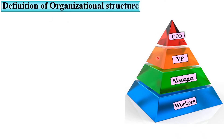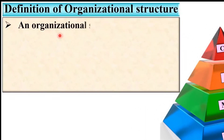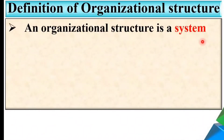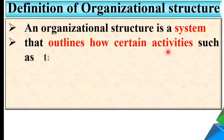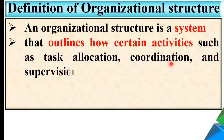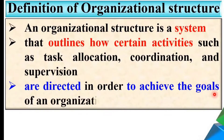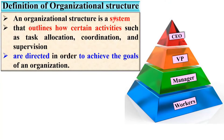Now, the definition of organizational structure: an organizational structure is a system that outlines how certain activities — such as task allocation, coordination, and supervision — are directed in order to achieve the goals of an organization. This definition has three parts: it is a system; it outlines activities such as task allocation, coordination, and supervision; and these activities are directed to achieve organizational goals.